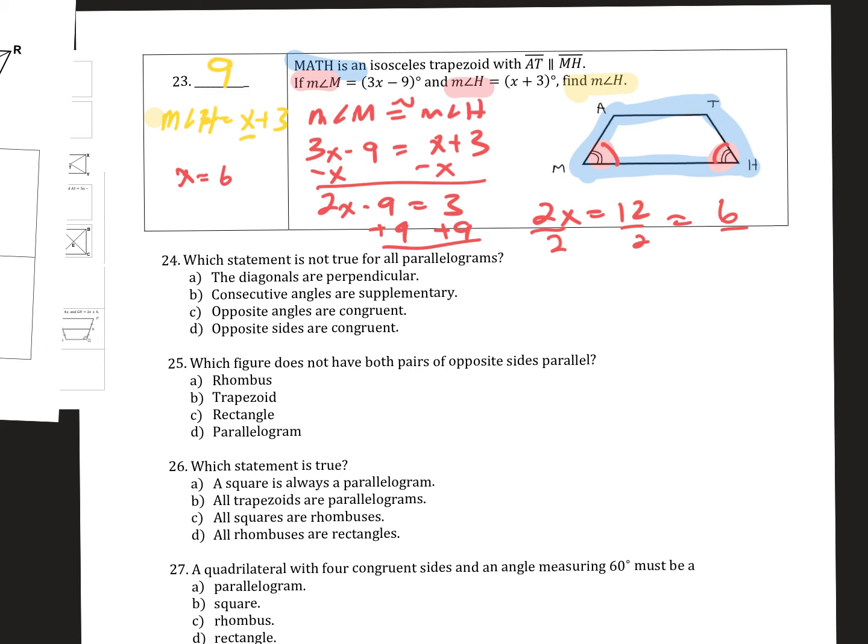Alright, number 24. Which statement is not true for all parallelograms? The diagonals are perpendicular - well, that's true for rhombus but not all parallelograms. Consecutive angles are supplementary, that's true. Opposite angles are congruent, that's true. Opposite sides are congruent. So it's A - the diagonals are not all perpendicular. It only happens in a rhombus and in a square.